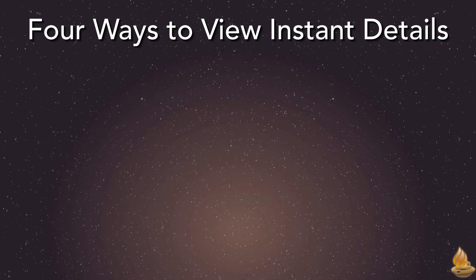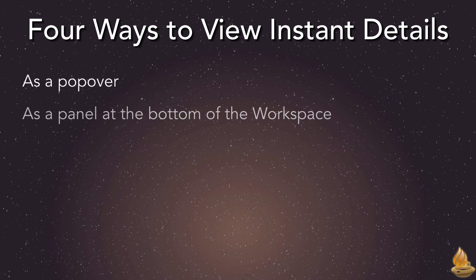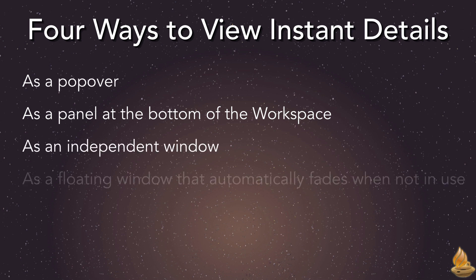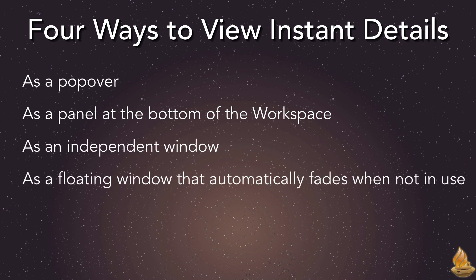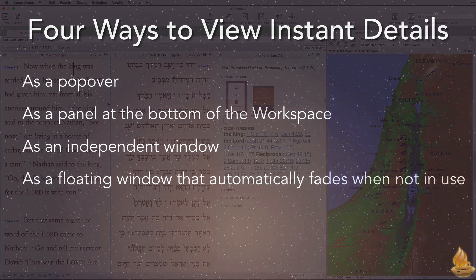We can choose to view Instant Details in any one of four different ways: as a pop-over, as a panel at the bottom of the workspace, as an independent window, or as a floating window that automatically fades when not in use. Here's a quick look at each of these views.